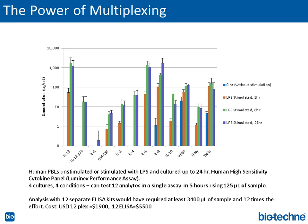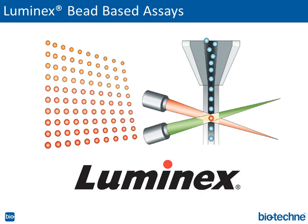This example illustrates all of those advantages. This was a small study done in our laboratories where we drew whole blood from a single donor and incubated the cells either unstimulated or stimulated with LPS for 24 hours, sampling at times 0, 2, 8, and 24 hours. The plasma was analyzed with our human multiplex assays — a 12-analyte plex. We tested 12 analytes in a single assay using just 125 microliters of sample, all in less than a day. Analysis with 12 separate ELISA kits would have required at least 3,400 microliters of sample, likely taken a better part of a week, and been nearly three times the cost.